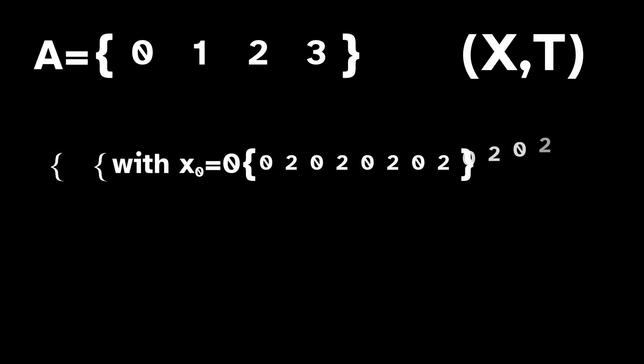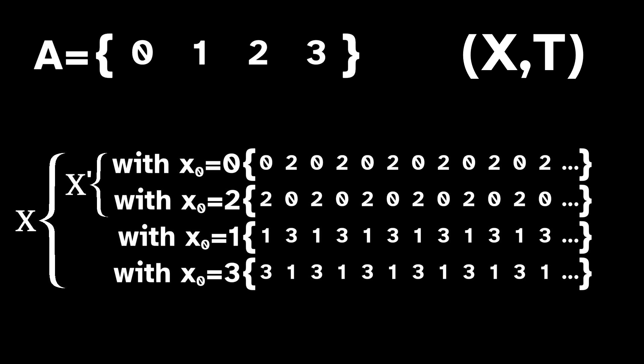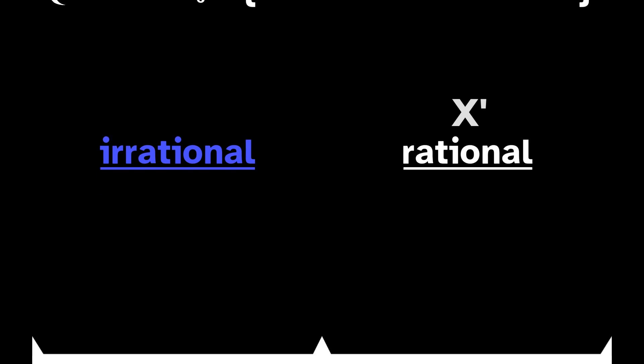If we start with a dynamical system x, t, then we can find a subsystem by choosing a subset of x, which we'll call x prime. x prime is a proper subsystem only if all the points in x prime map back to x prime when t is applied to them.